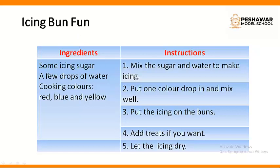Ingredients — what do you need? Some icing sugar, which means powdered sugar. A few drops of water. And cooking colors — red, blue, and yellow. Red, blue, and yellow are the primary colors. They are the basic colors. You can also make other colors from these basic colors. These were the ingredients you need, and here are the instructions.